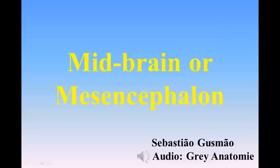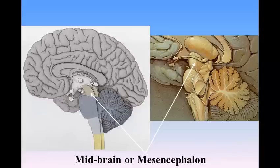Anatomy of the Human Body Part 4 by Henry Gray. The Midbrain, or Mesencephalon, is the short constricted portion which connects the pons and cerebellum with the thalamencephalon and cerebral hemispheres.